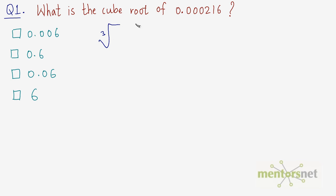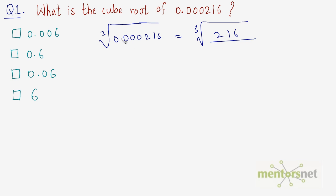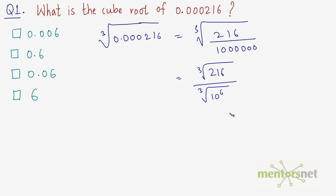We have to find the cube root of 0.000216. This can be written as the cube root of 216 divided by 1 followed by 6 zeros — that is, 216 over 10 raised to the power 6, since there are 6 digits after the decimal point.